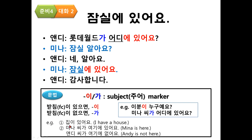In this example, 있어요 has the meaning of existence and position, because 있어요 can have two different meanings. Context is necessary to understand which meaning is expressed. So: 집이 있어요 — I have a house. Mina 씨가 여기에 있어요 — Mina is here. Andy 씨가 여기에 없어요 — Andy is not here.